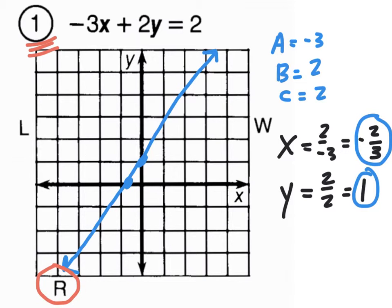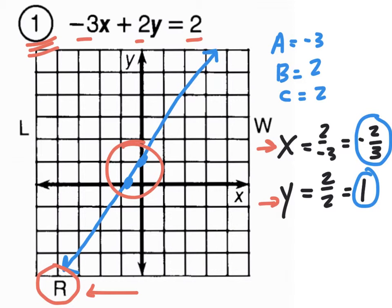The trick is: pick out a, b, and c; do your calculations for the x-intercept and the y-intercept; plot those two dots; draw a nice long line through those dots using your ruler; and figure out which letter you hit. Not too bad.